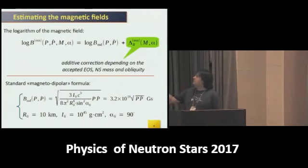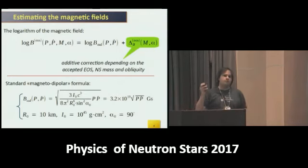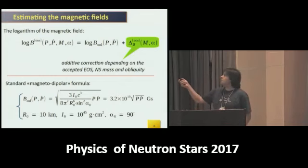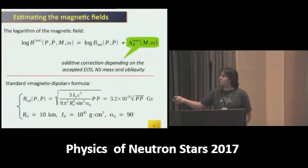The second is the additional correction term, which absorbs information about the real pulsar radius, moment of inertia, and magnetic angle. More precisely, it absorbs information about how these parameters deviate from the classical values assumed in the formula.